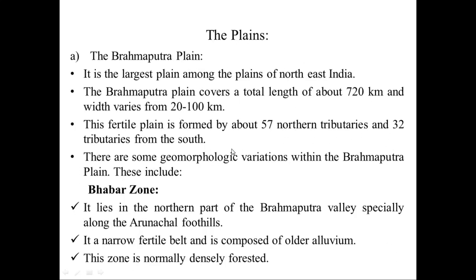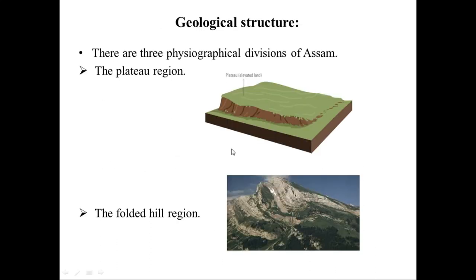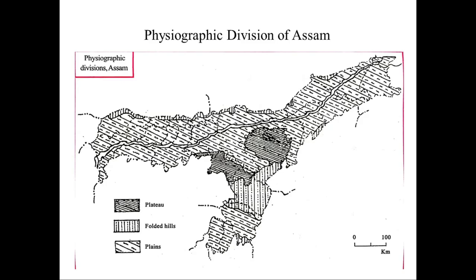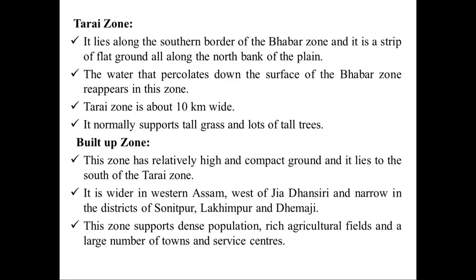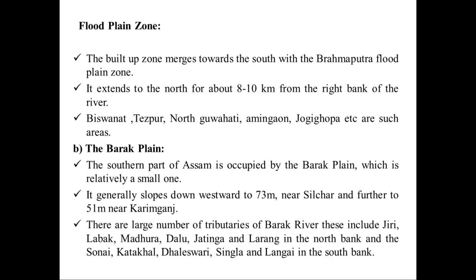Next we discuss the Barak plains. The Barak plain covers the southern part of Assam. It has three districts: Cachar, Karimganj, and Hailakandi. The Barak plain generally slopes downward westward.